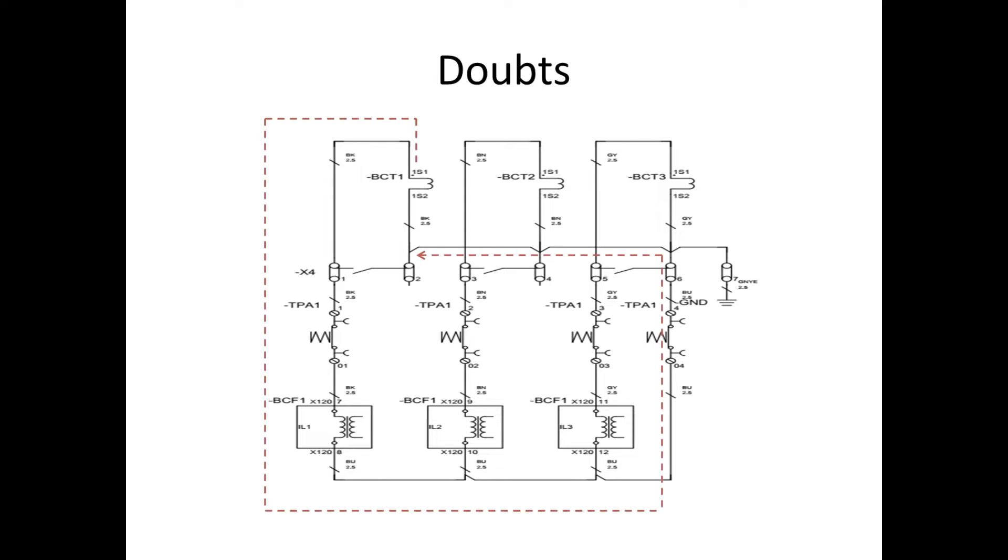He had the doubt. For R phase, for example, there should be a return current, and probably the return current will take the neutral path. But in neutral path there is no current, so how does the return current take place? Since he measured the neutral current, it shows 0A, so he asked how this return current takes place over here.